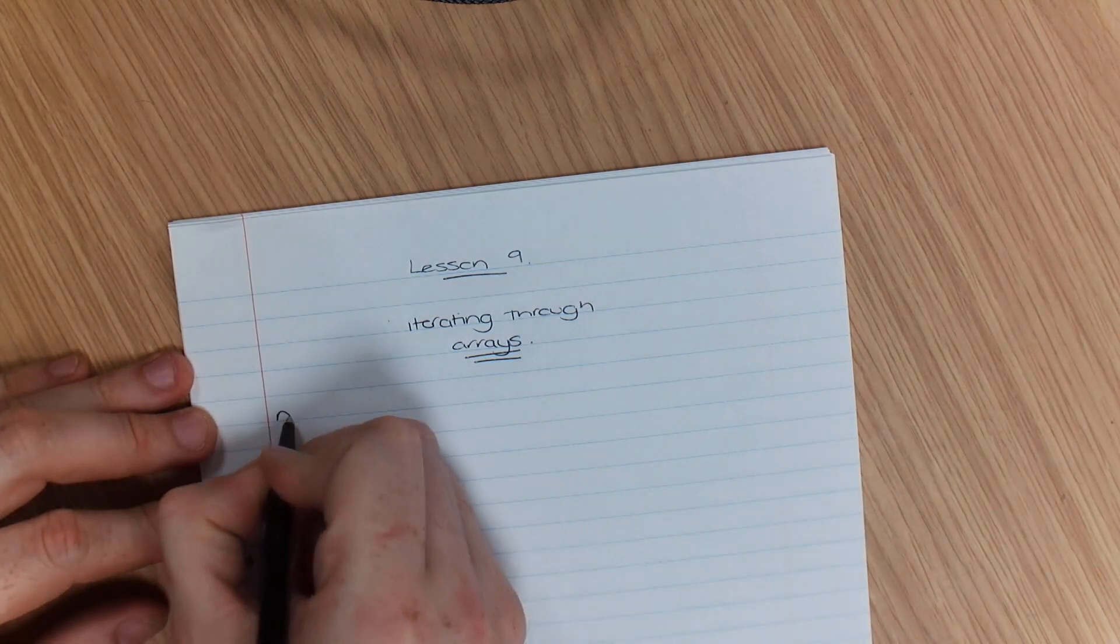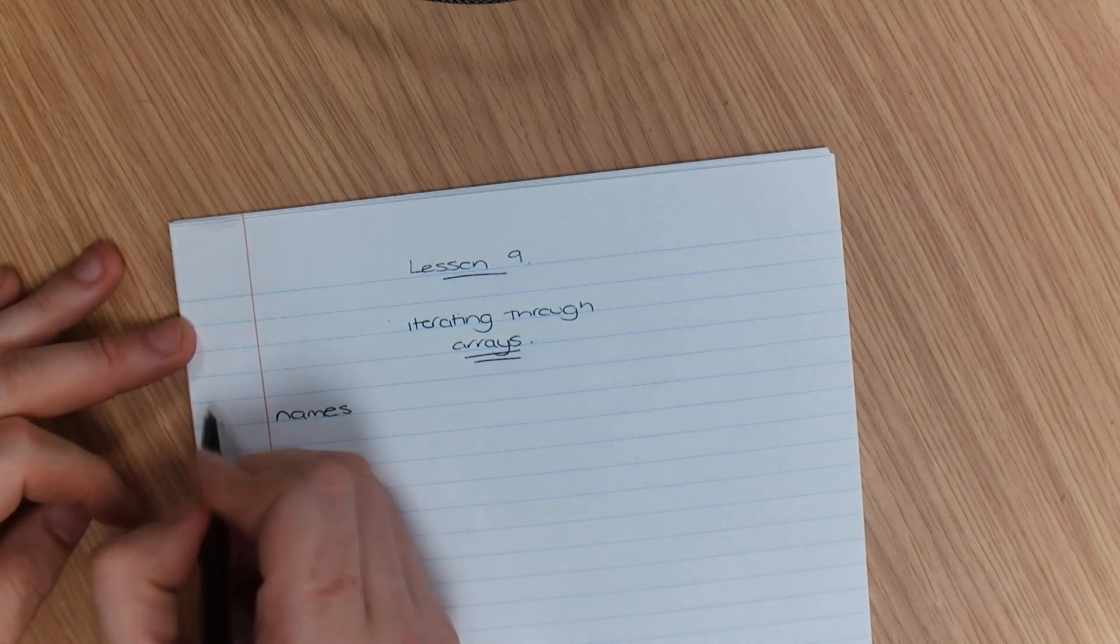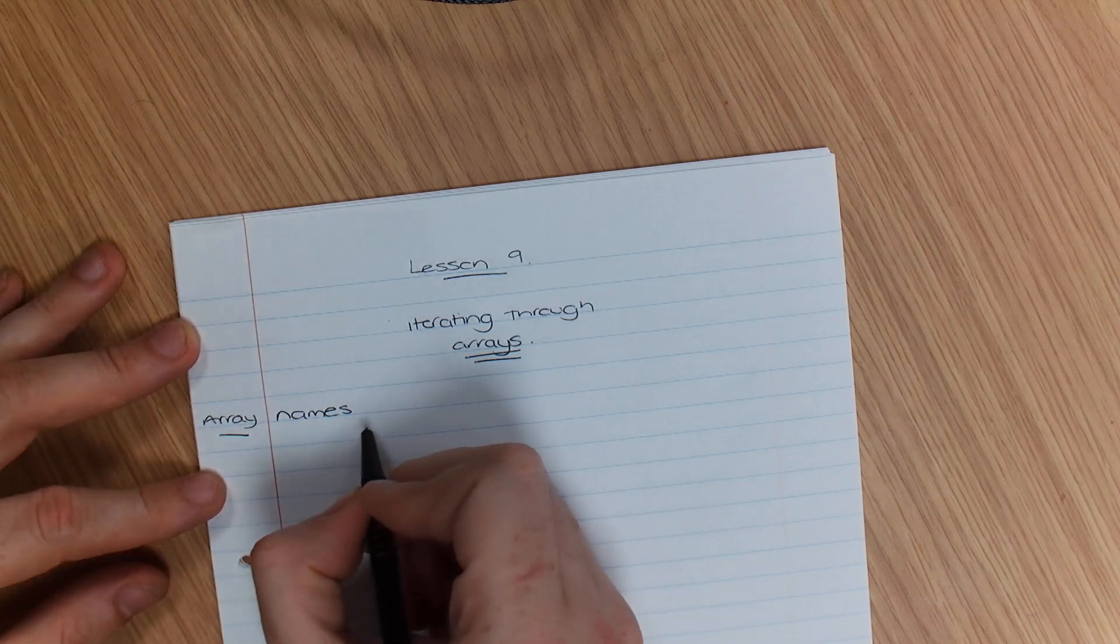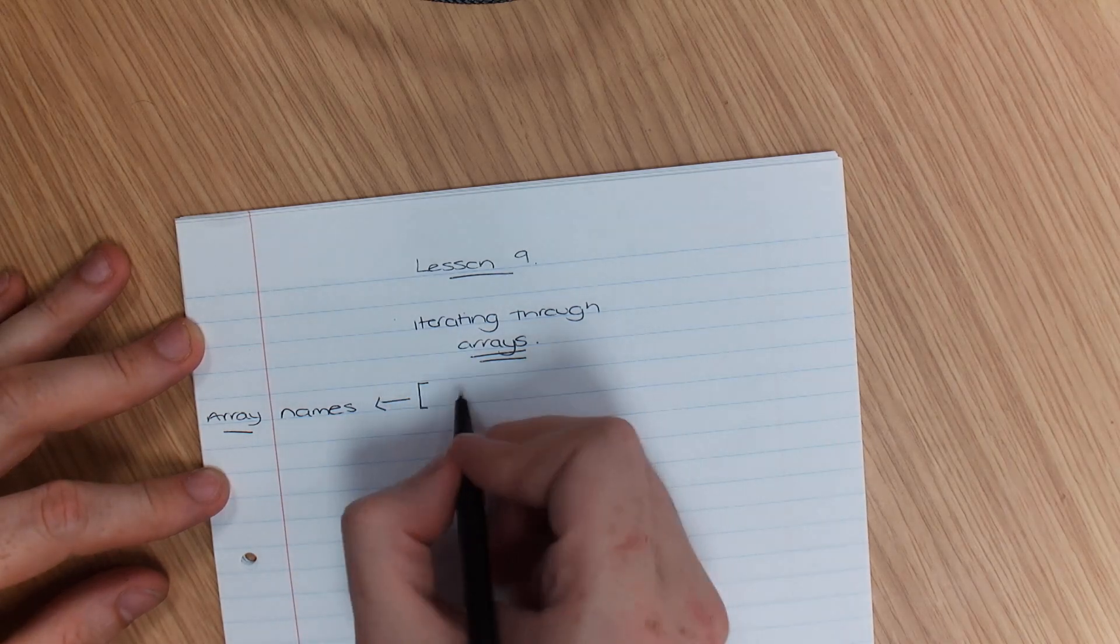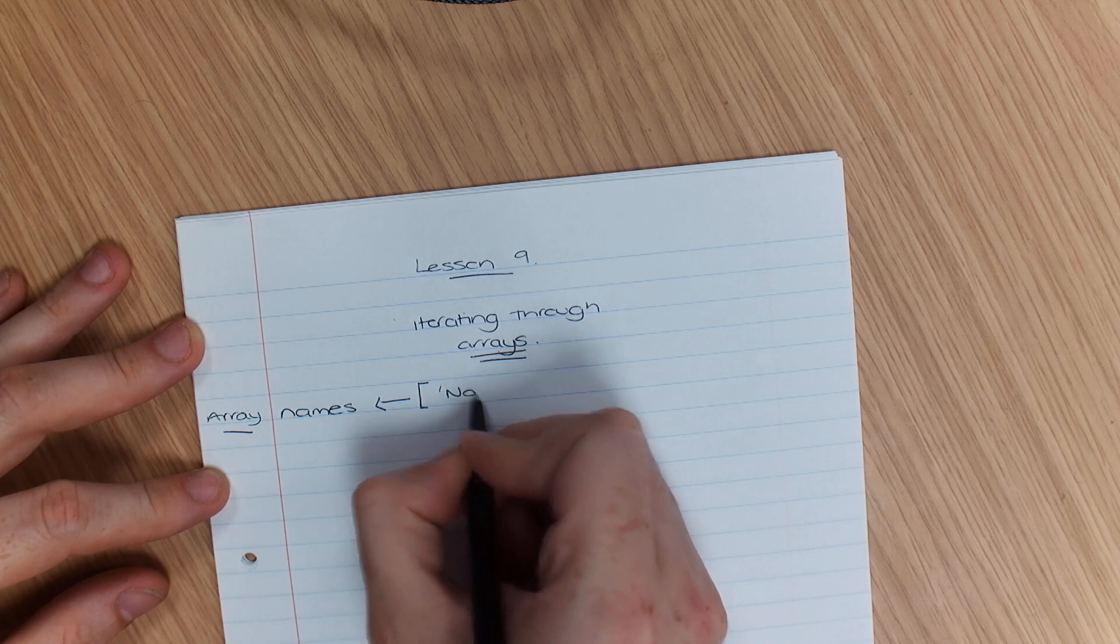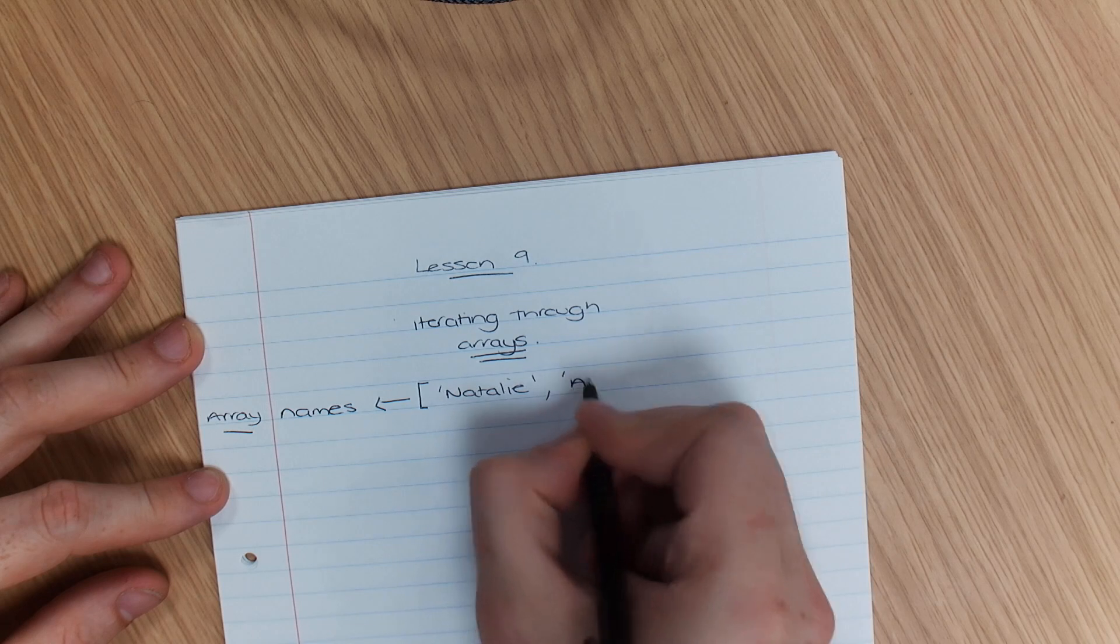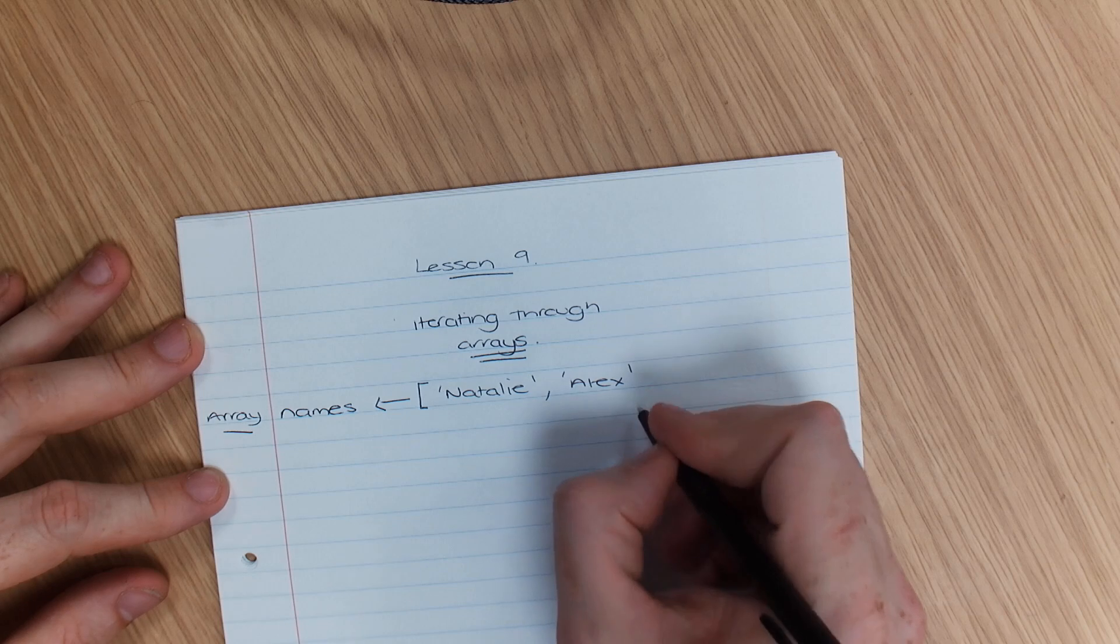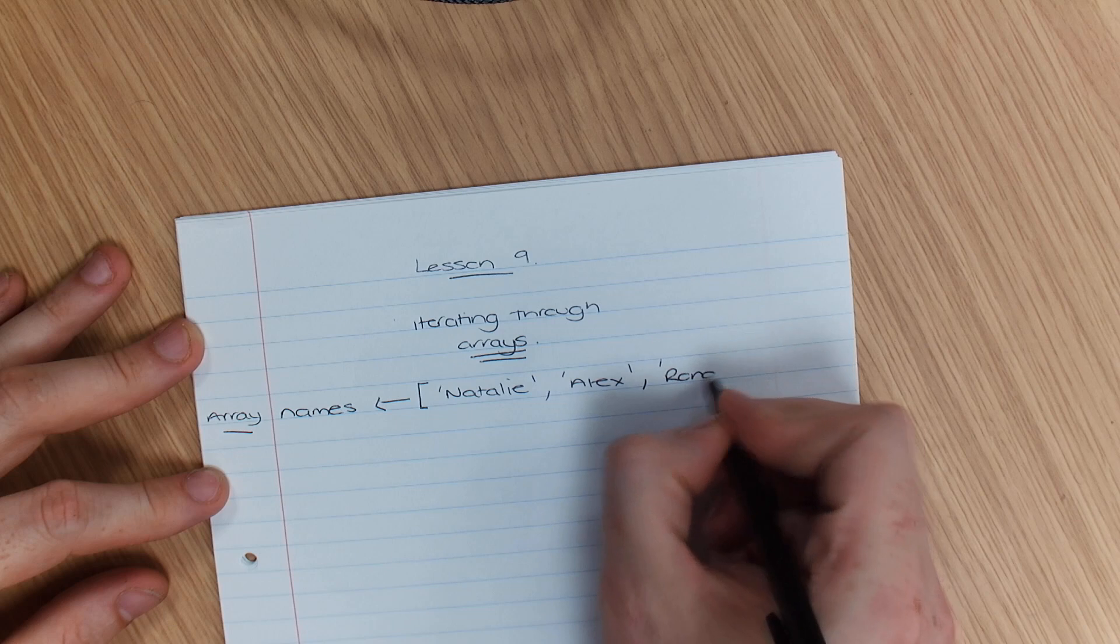So we're going to say names. You can put the word array before if you want. Some people do, some people don't, but you won't be penalized for it. So we've got our array names and I'm going to allocate those names and we're going to go for Natalie, Alex, and let's go for Ronald.